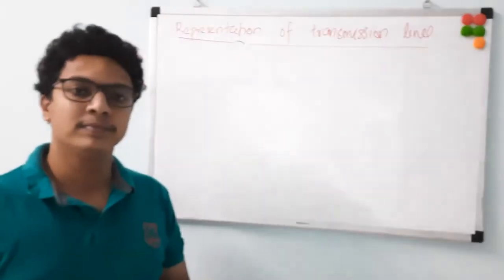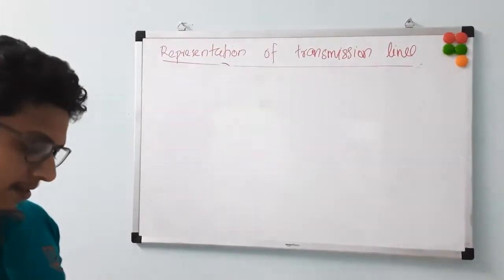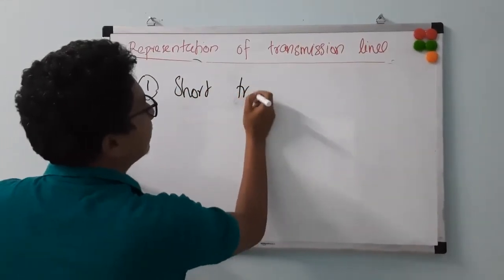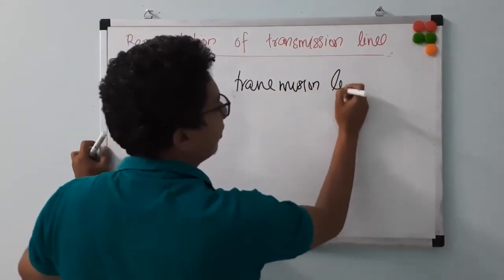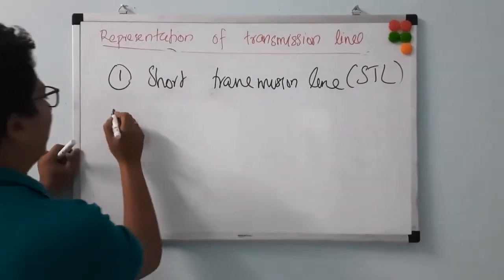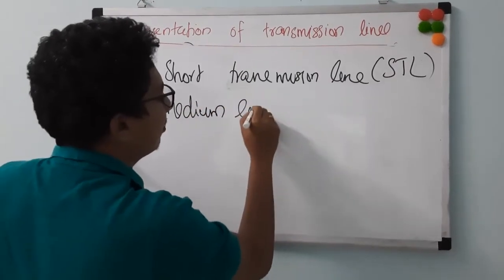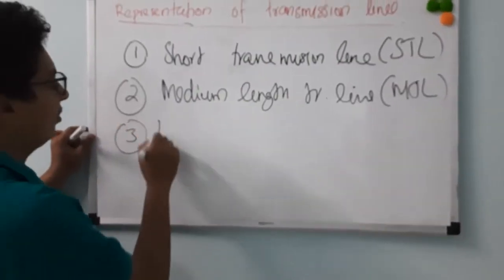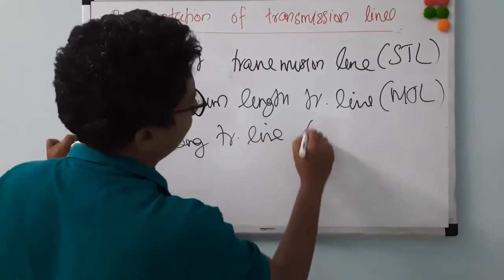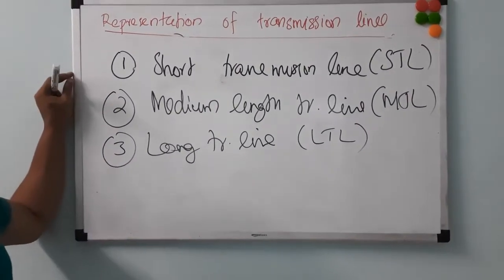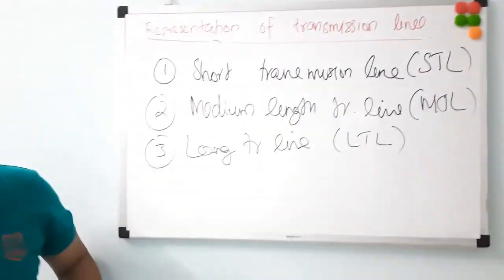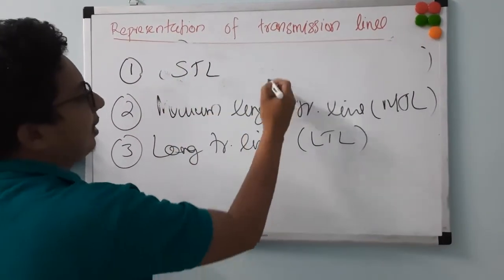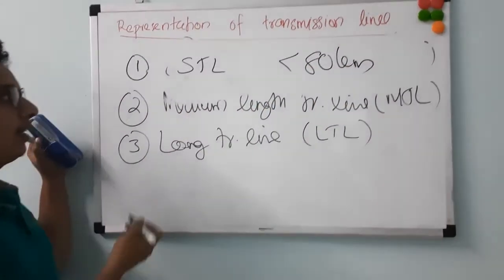In terms of length, transmission lines are classified into three types: short transmission lines (STL), medium length transmission lines (MTL), and long transmission lines (LTL). A short transmission line is one whose length is less than around 80 kilometers. A medium length transmission line has a length between 80 and 240 kilometers. When the length is more than 240 kilometers, it is called a long transmission line.